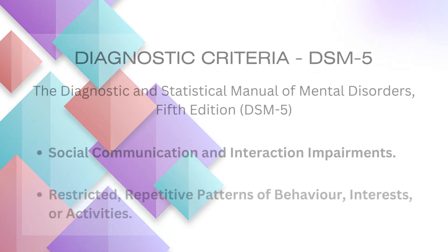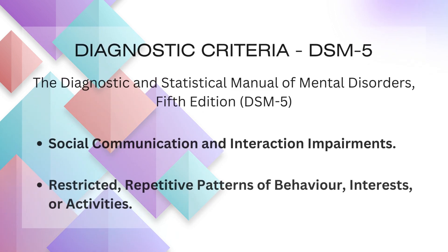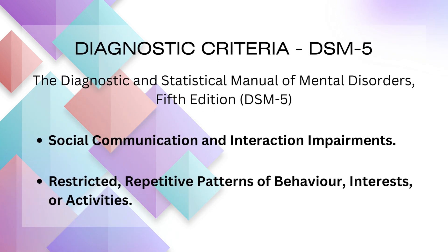Diagnostic Criteria: The Diagnostic and Statistical Manual of Mental Disorders, 5th Edition, or DSM-5, is commonly used by clinicians to diagnose autism. To receive an autism diagnosis according to the DSM-5, an individual must exhibit persistent deficits in two core areas: social communication and interaction impairments, and restricted, repetitive patterns of behavior, interests, or activities.